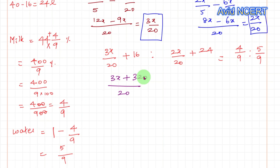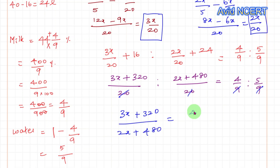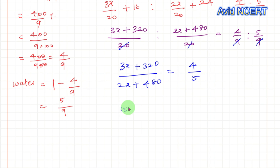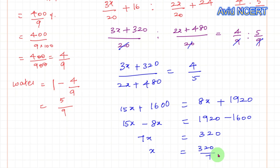Taking LCM = 20 to simplify, the milk expression becomes 3x + 320 over 20, and water becomes 2x + 480 over 20. Setting up the ratio: (3x + 320) / (2x + 480) = 4/5. Cross-multiplying: 5(3x + 320) = 4(2x + 480), which gives 15x + 1600 = 8x + 1920. Rearranging: 15x minus 8x = 1920 minus 1600, so 7x = 320, giving x = 320/7.